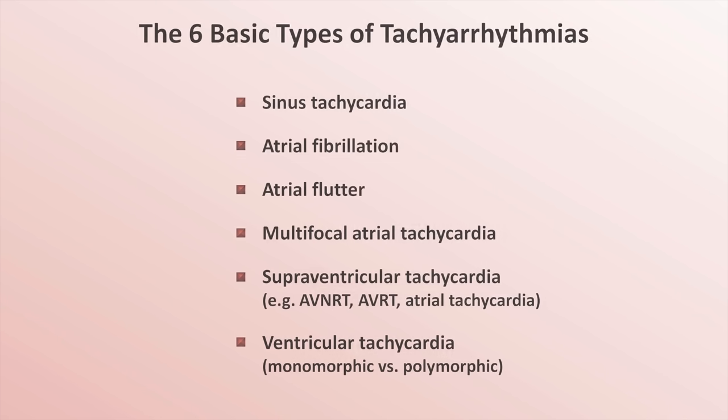So those are the six basic types of tachyarrhythmias. Some of these — specifically SVT, VT, and atrial flutter — have numerous subtypes and variations to worry about at a later stage of training. At this point, I recommend proceeding to my next EKG video entitled 'How to Identify Almost Any Tachyarrhythmia with 6 Easy Questions.'